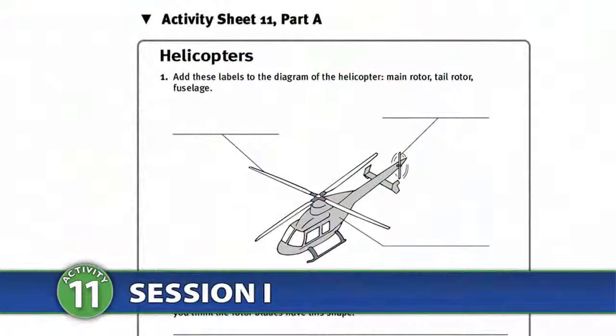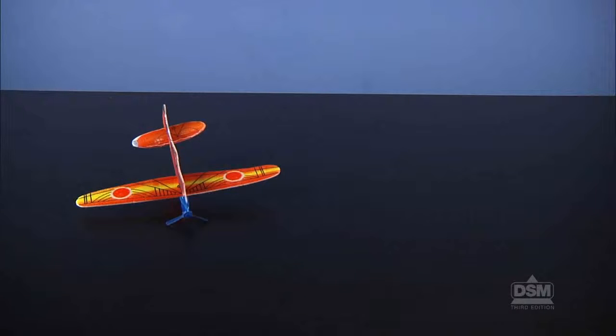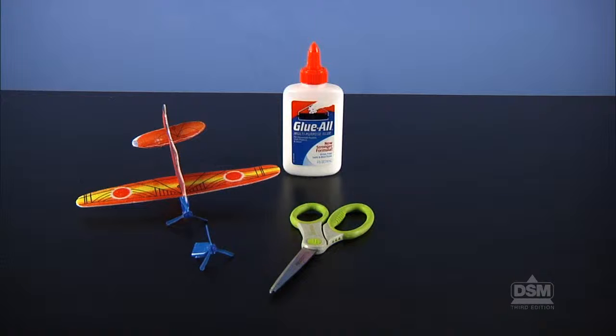To prepare for Session 1, make a copy of Activity Sheet 11, Part A for each student. You will need a fully assembled foam glider, an extra glider propeller, a pair of scissors and some glue. You will also need a whirligig to show students.